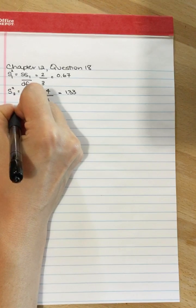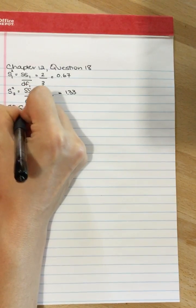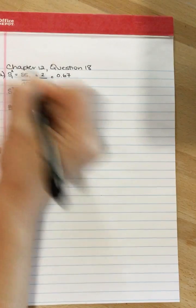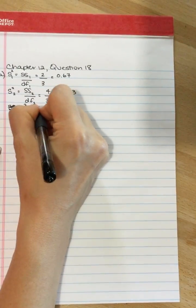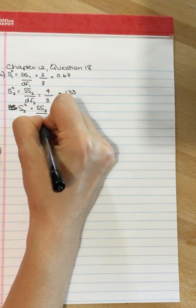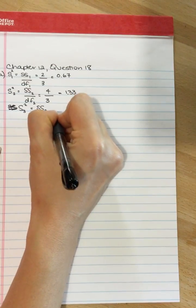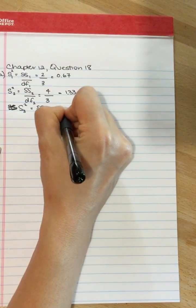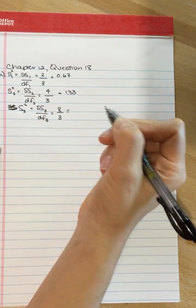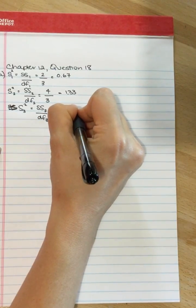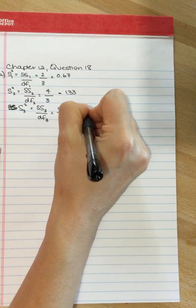We'll do that. S3 squared is equal to sum of squares 3 divided by the degrees of freedom of 3. The sum of squares here was 8 divided by 3, which is equal to 2.67.